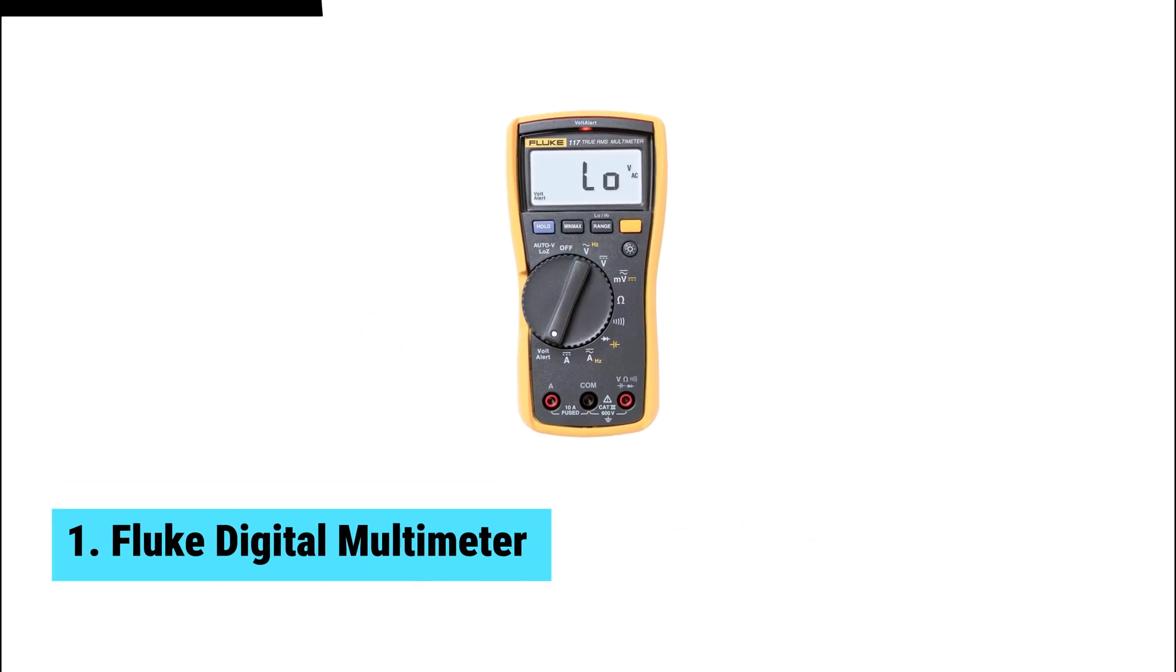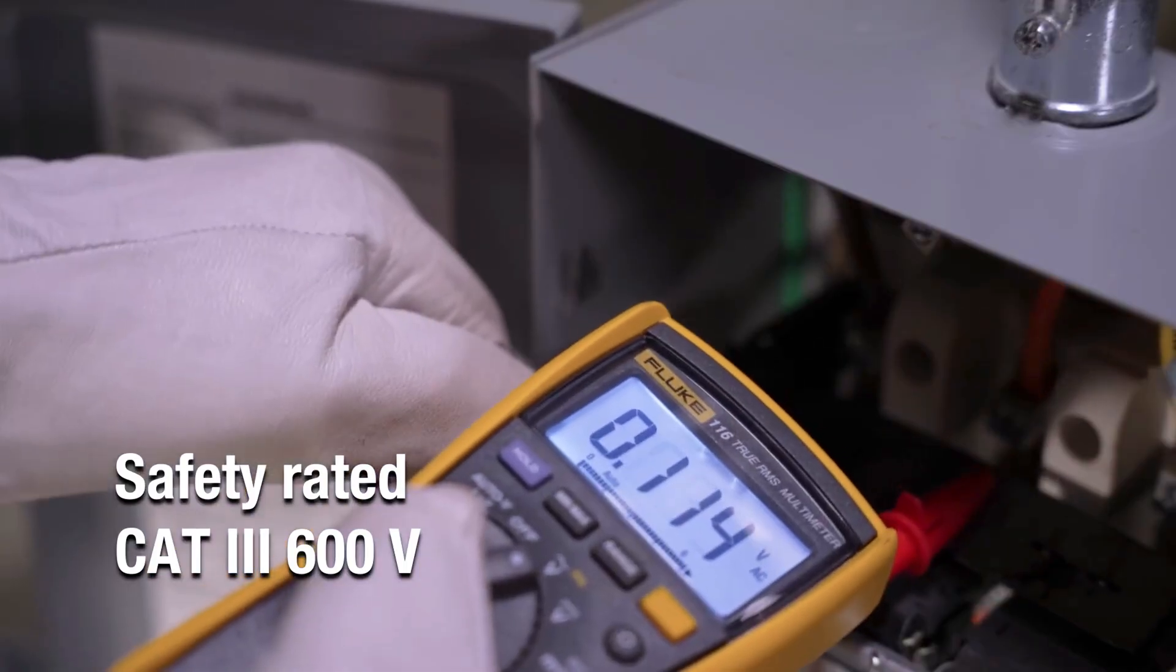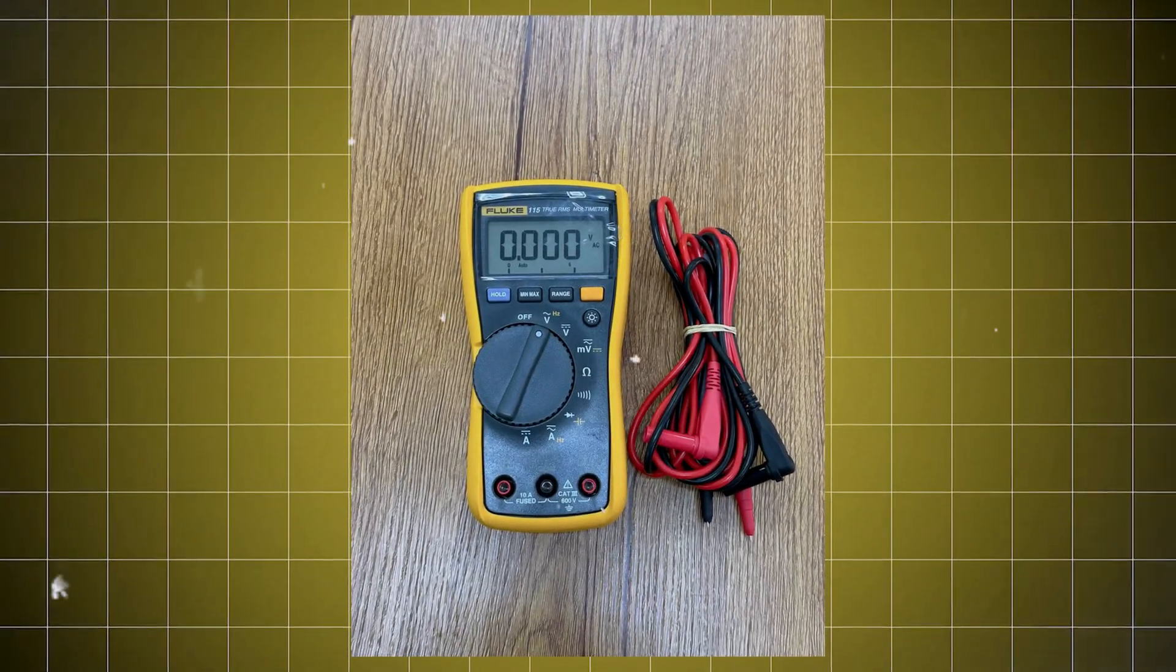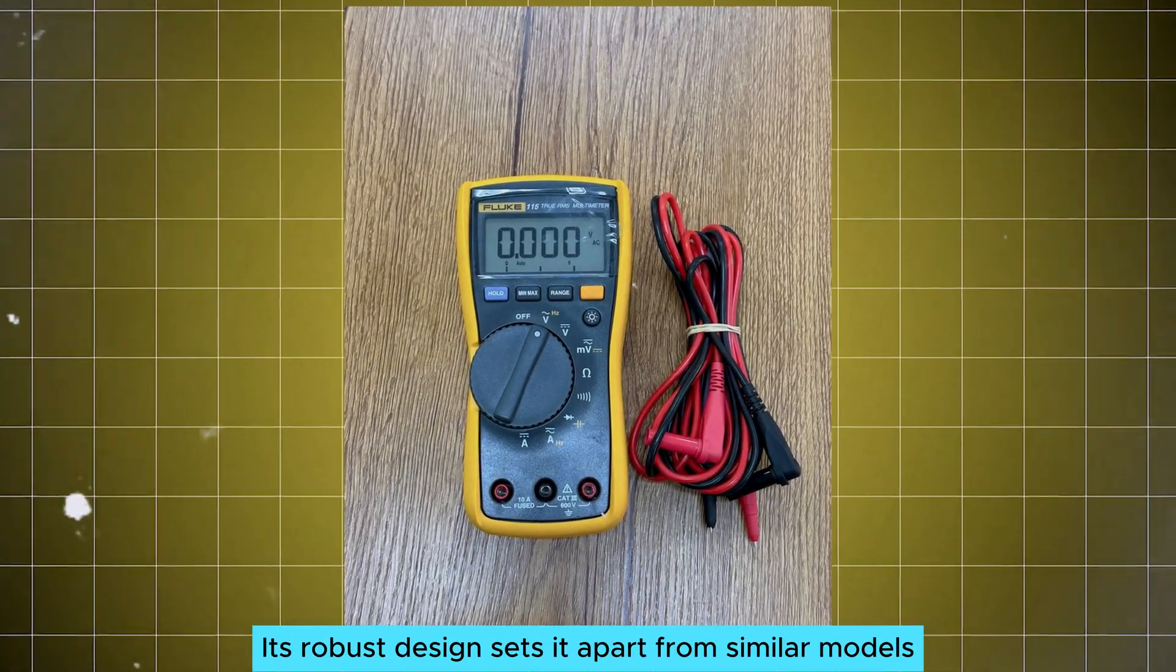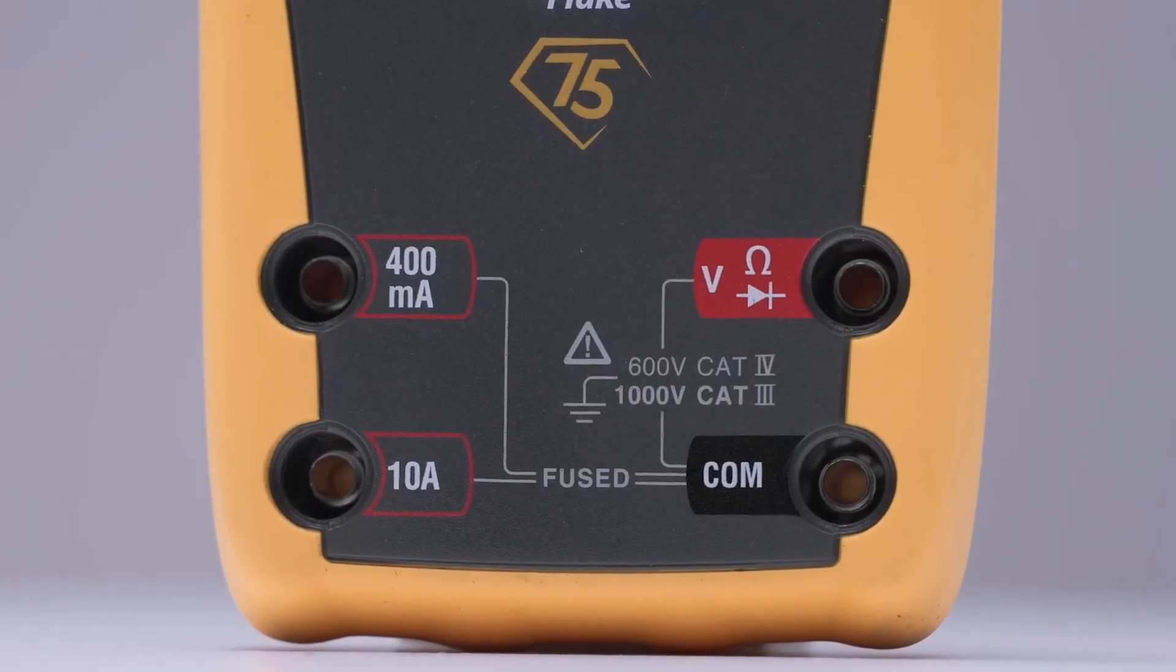At number one, we have Fluke Digital Multimeter, the best digital multimeter overall. Ready for precise measurements? Meet the Fluke Digital Multimeter, your ultimate companion on every job. Its robust design sets it apart from similar models, making it a top choice for both professionals and DIY enthusiasts.